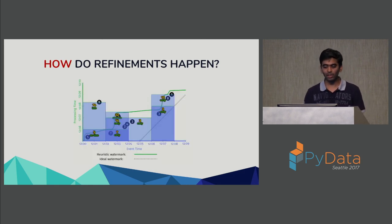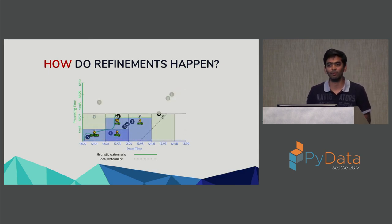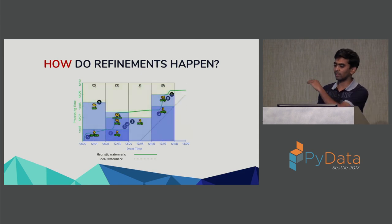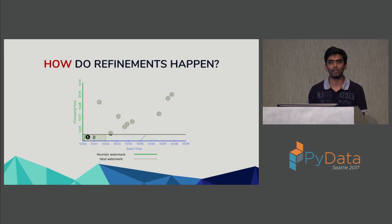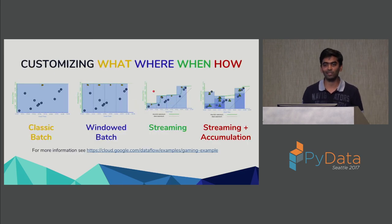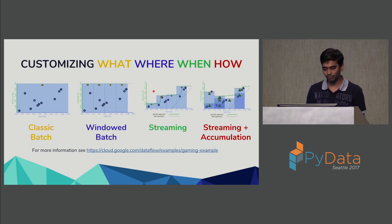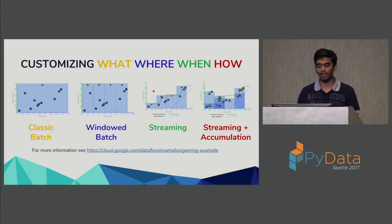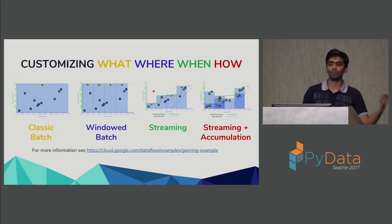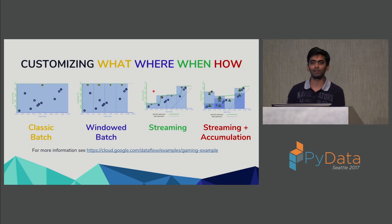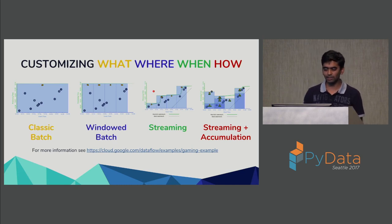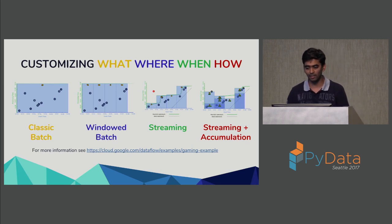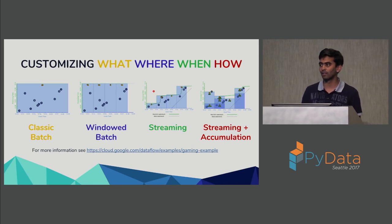There are different modes of updating in Beam, and for more details there's a full paper quality dataflow model or the Beam website. For a particular window we saw multiple outputs being generated rather than just one. This was a huge crash course in the Beam model, and customizing the what, where, when, and how helped us evolve from a classic batch pipeline with one window from minus infinity to infinity to a streaming pipeline that could handle late data.